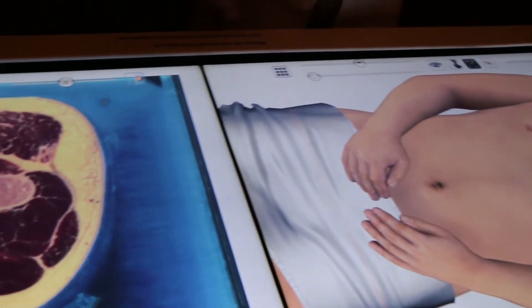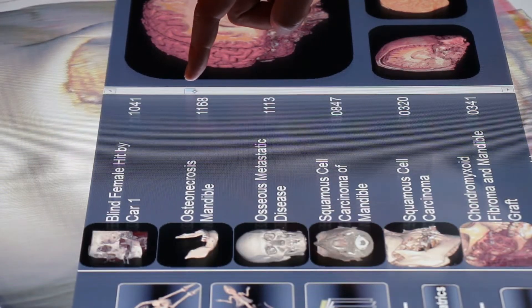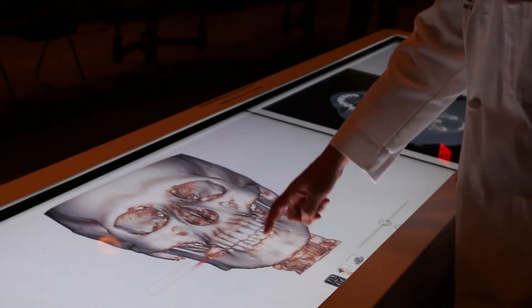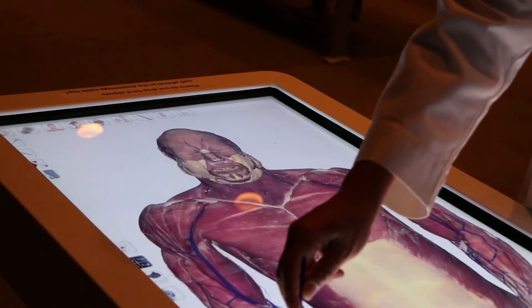The new tool is called the Anatomage Table. It uses sectioned images and software to reconstruct two-dimensional images into three-dimensional images. With the software, students and anatomy teachers can dissect through the body in layers or select particular structures and sections to display.